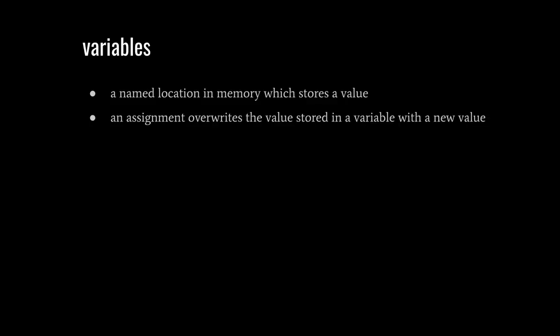Now in our code we want to be able to store values in memory, and for that we have what are called variables. A variable is a named location in memory which stores a value. When you create a variable you, the programmer, pick the name of the variable. It can be whatever you want, it can be say Tom, Dick or Harry or X, Y or Z or whatever. In practice you should pick good meaningful names that indicate what is being stored in these variables.